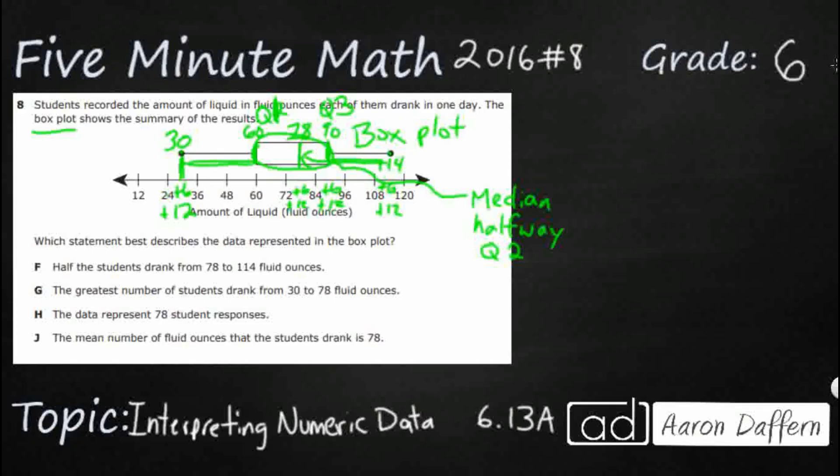So let's see if we can now, if we understand that, understand this. It's half the students drank from 78 to 114 fluid ounces. All right. So 78 is right here your quarter 2. 114 is at the very edge. They say, is that half? Yeah, it looks like it might be half to me because the other half is going to be from 30 to 78. So that looks like we might have our answer right away.